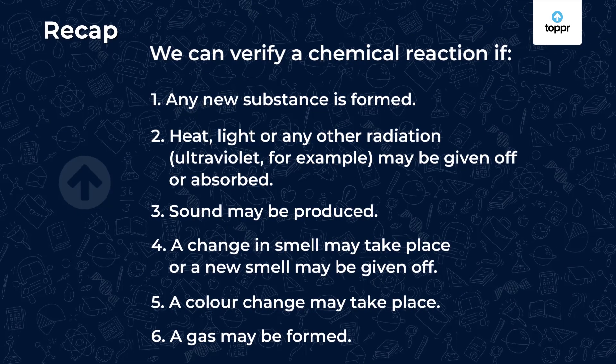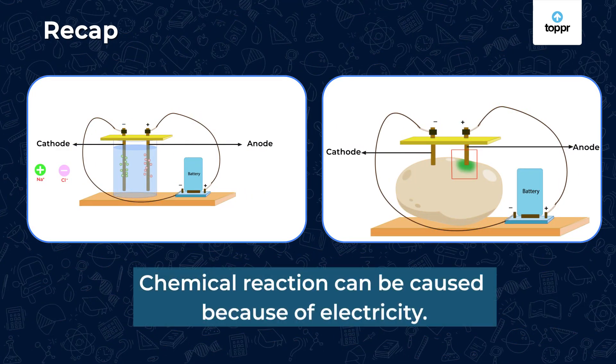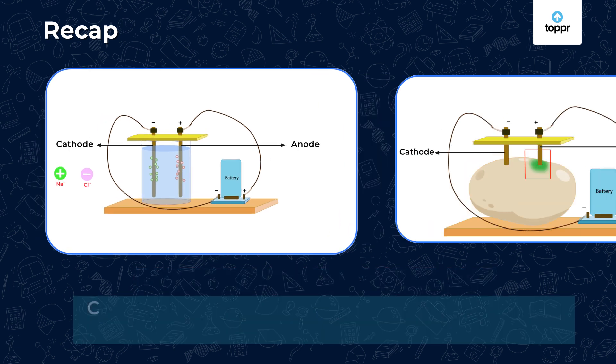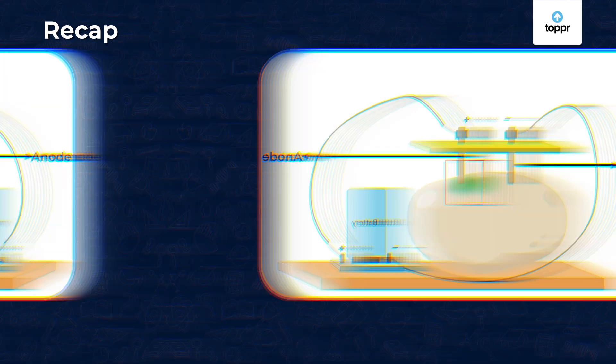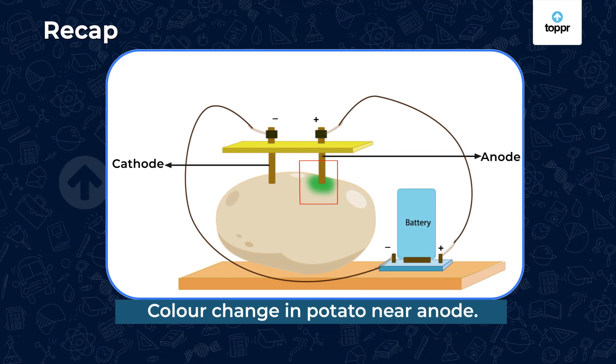That is all for today. Let's recap whatever we have learned today. First, we learned to detect any chemical reaction with the help of the observations listed here. Then we saw that a chemical reaction can be caused because of electricity, and we saw two activities to support the fact. We observed that chlorine gas bubbles are formed when we pass electricity through a salt water solution. Then we observed a color change in a potato near the anode.